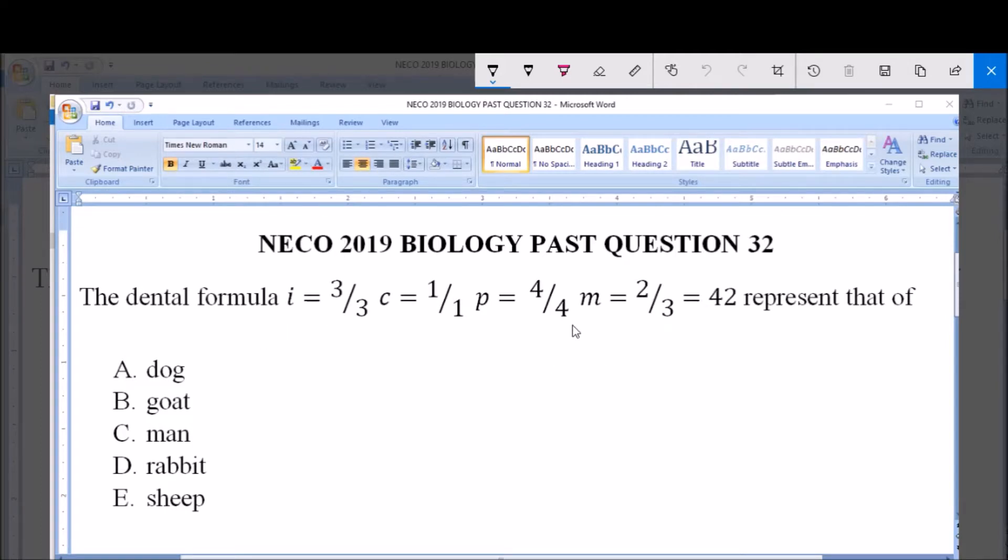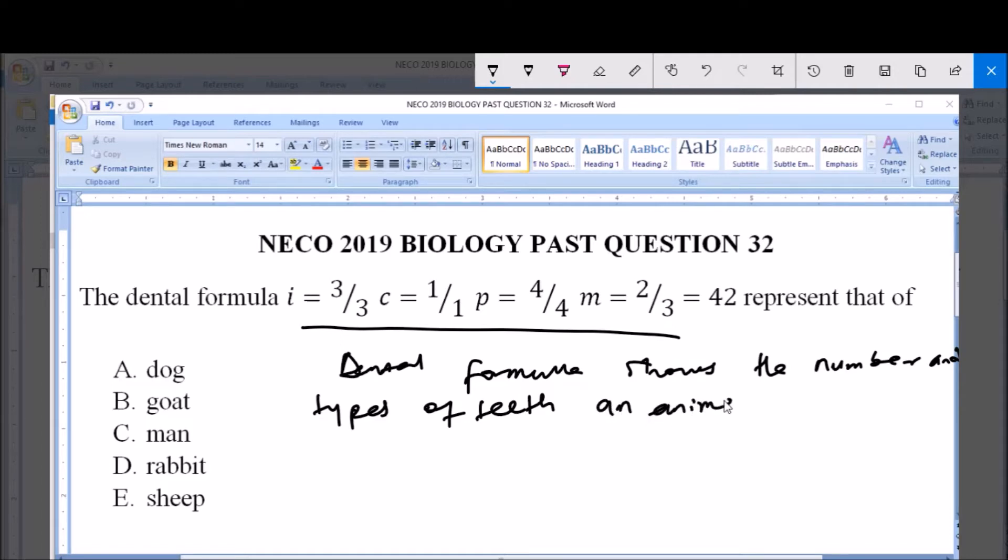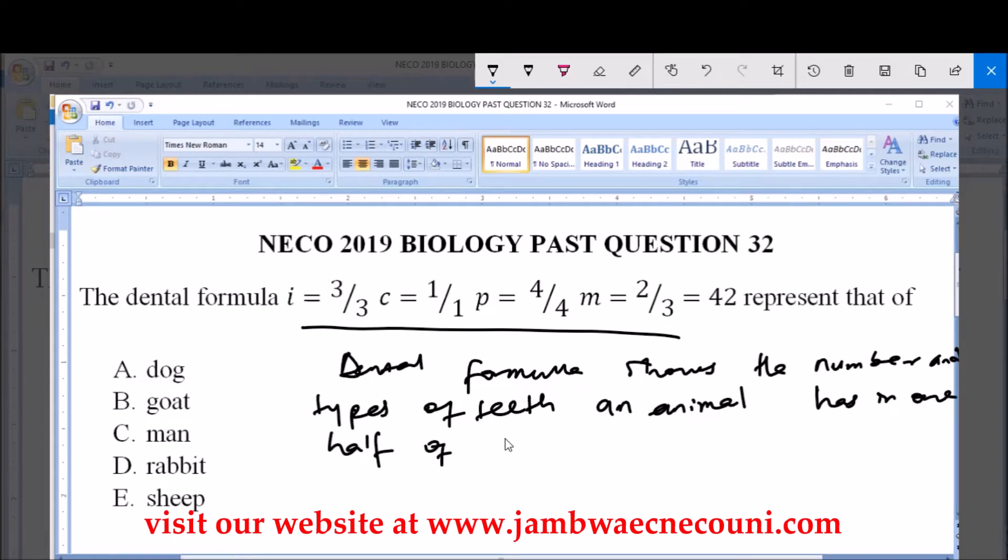We are asked to ascertain the animal that possesses this dental formula. Now, the dental formula shows the number and types of teeth an animal has in one half of each jaw.